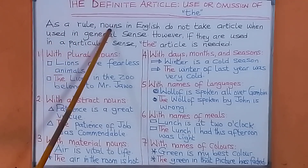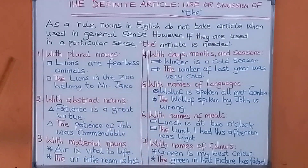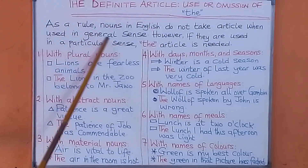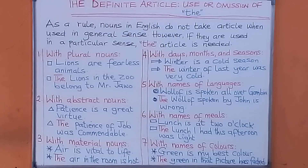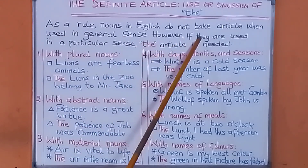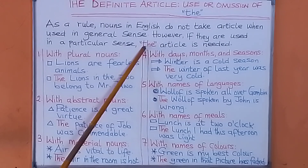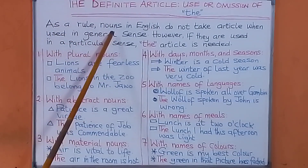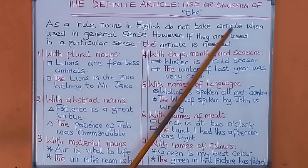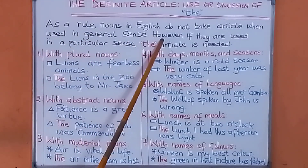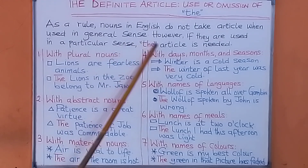As a rule, all the nouns in English do not take articles when used in a general sense. When you are using nouns in general sense, you don't put any article — you don't put 'the', you don't put 'an', you don't put 'a'. However, if you are using nouns in a particular sense, then you have to put 'the', or 'an', or 'a' in the sentence. So, as a rule: nouns in English do not take articles when used in general sense; however, if they are used in a particular sense, then an article is needed.